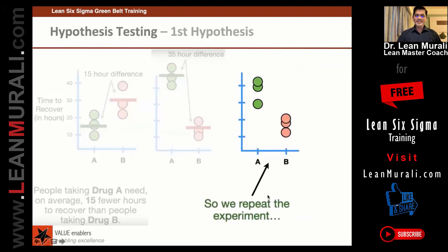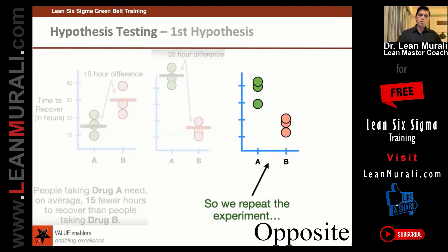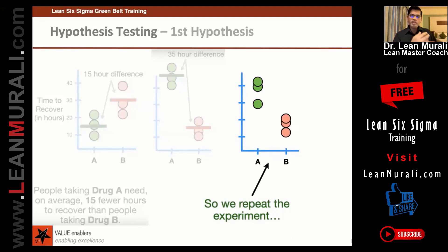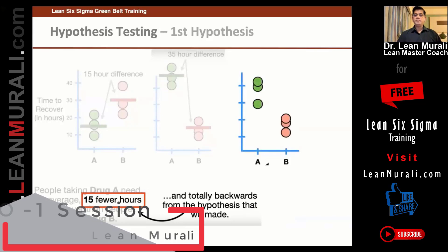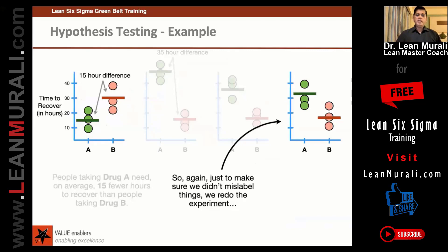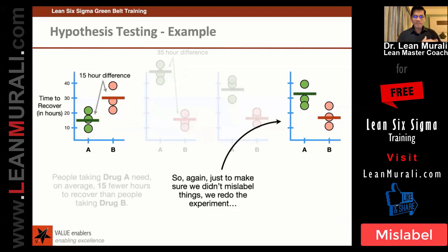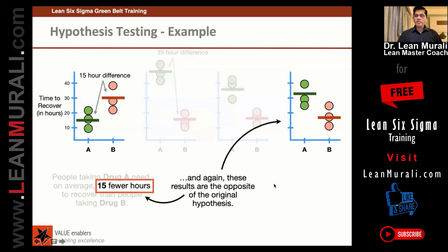We repeated the experiment, and we got the same result — the opposite of the first experiment. The second experiment was also opposite. The third experiment was also opposite. I am comparing with the first experiment because the claim we made was that drug A was recovering people 15 hours faster than drug B — that is where we made the hypothesis. Again, we see the result totally backward from the preliminary experiment. We repeated again, making sure we didn't mislabel, picking people randomly without bias toward healthy or unhealthy people, and again the results were opposite to the original hypothesis.